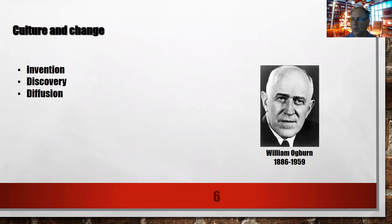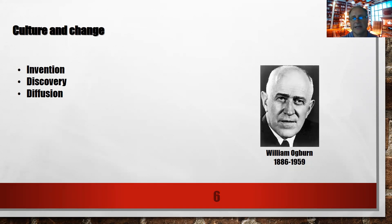According to sociologist William Ogburn, when it comes to culture and change, there are three important sources of cultural change. Invention is the combination of existing elements and materials to form new ones — examples include rocket propulsion to explore the universe. Discovery is a new way of seeing reality, with examples such as medical discoveries and advances. Diffusion is the spread of an invention or discovery from one area to another — many familiar aspects of modern life, such as clothing and clocks, come from other lands.